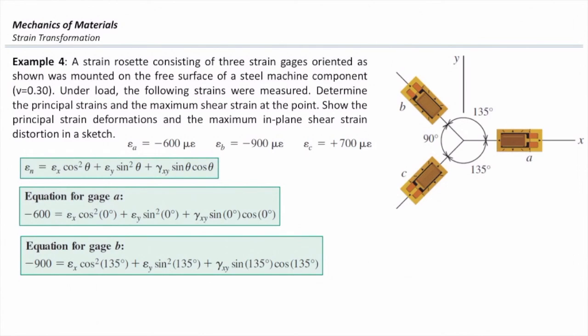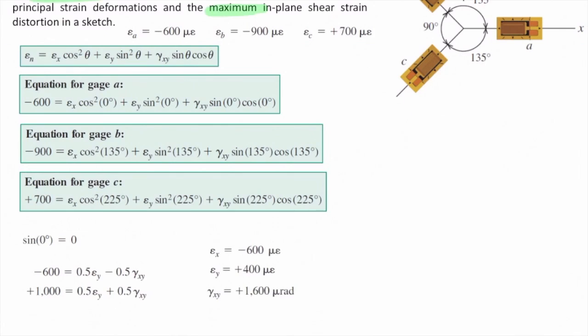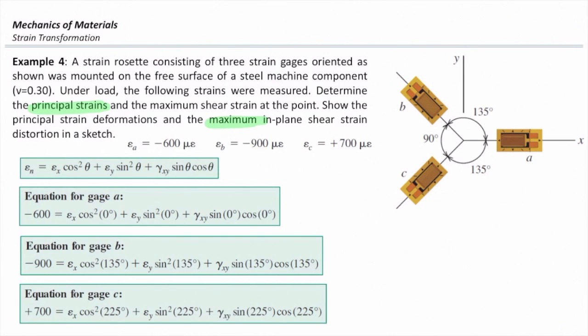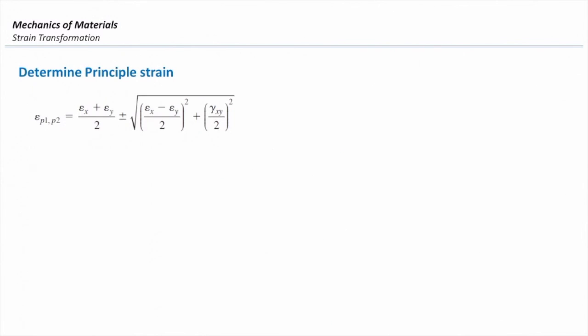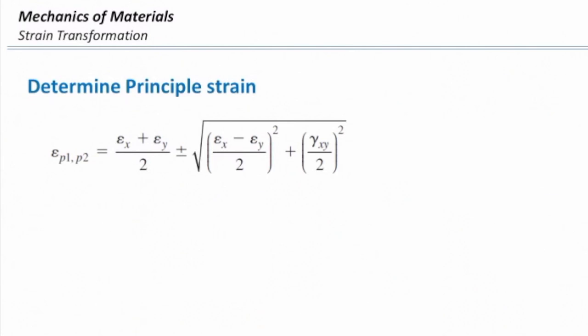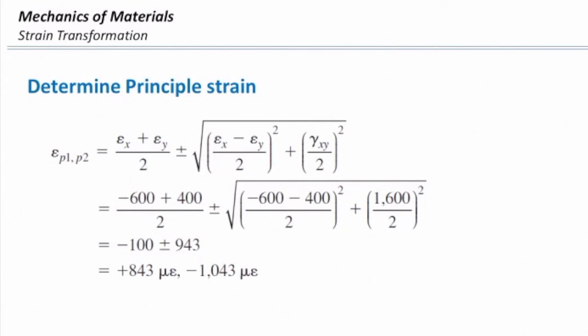That is the only trick about solving this kind of problem. And that gives me a strain in x direction equal to negative 600, strain in y direction positive 400, and gamma xy equal to 1600. Remember, these are a strain in xy and gamma xy. These are not principal stresses. How can I determine principal stresses? They are pretty easy. I just need to plug the values into this equation and determine the principal stresses. If I do that, I will get 843 and negative 1043 microepsilons for principal normal stresses.